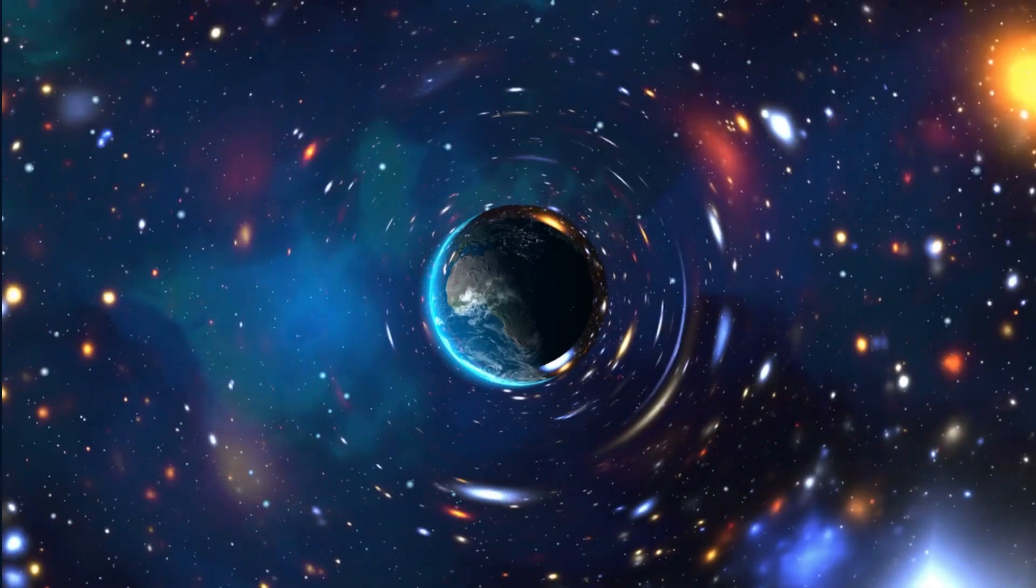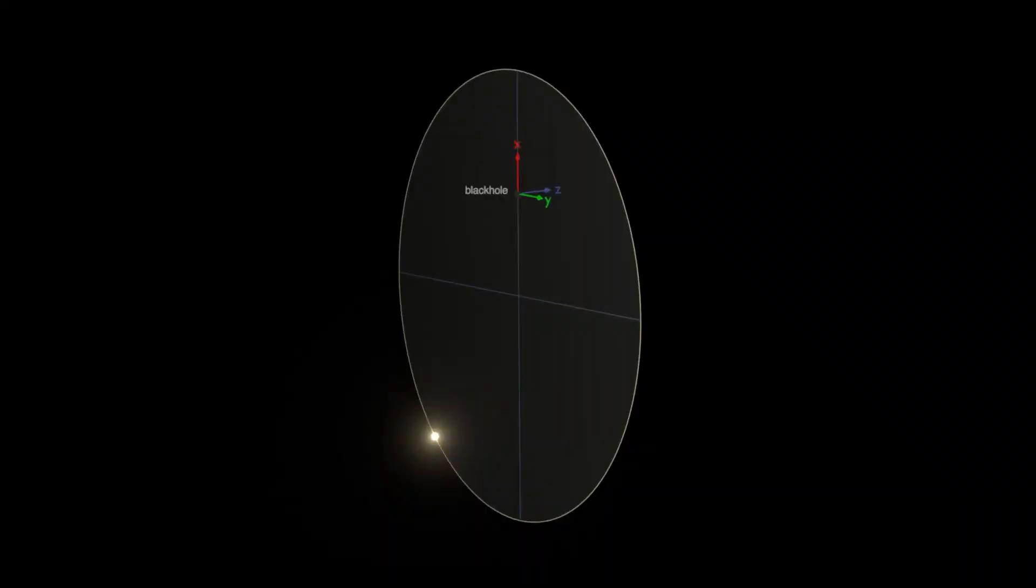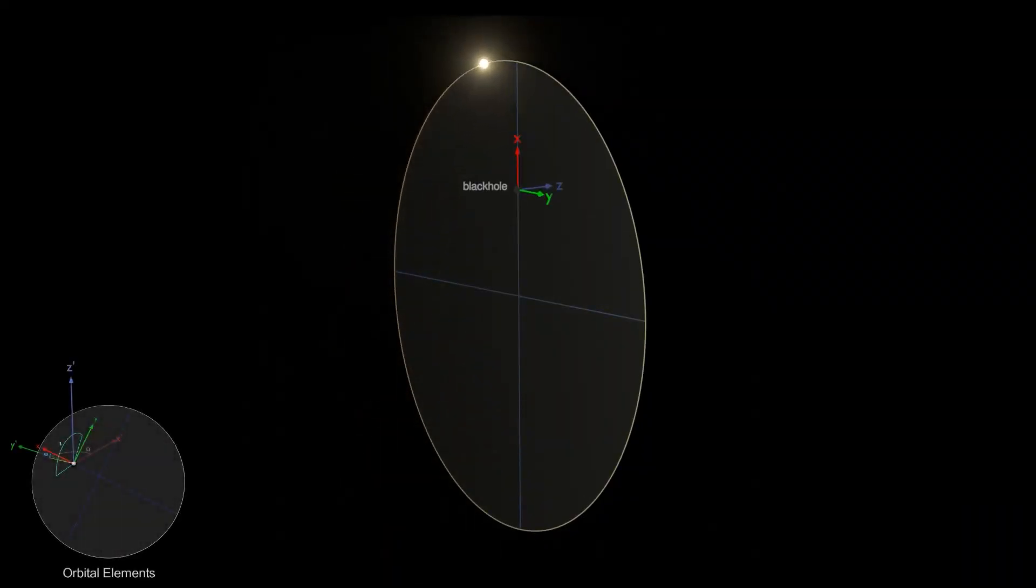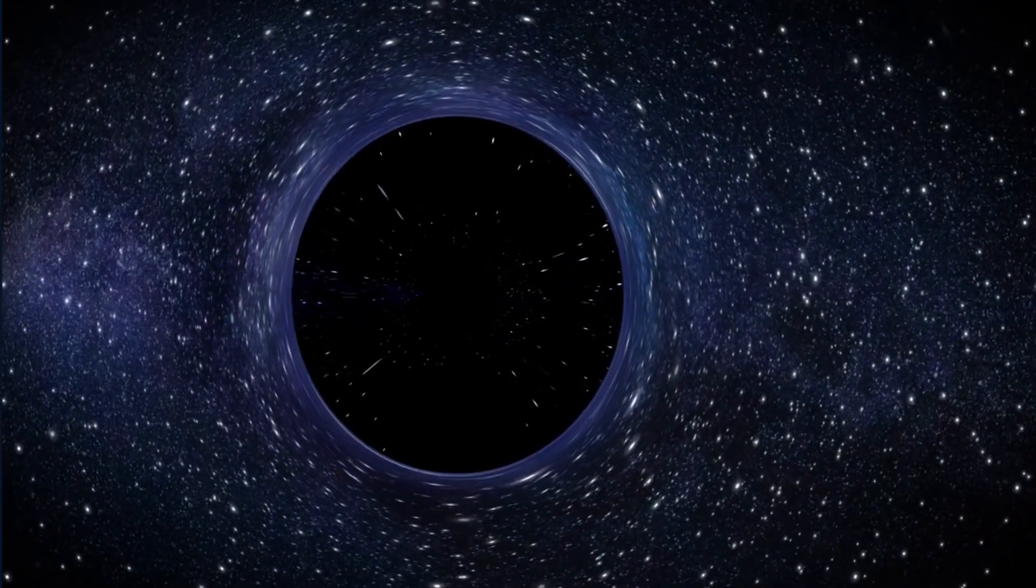However, the likelihood of a TDE happening in our own solar system is extremely low. The sun is too small to be affected by the tidal forces of a black hole, and it is also too far away from any known black holes to be at risk.